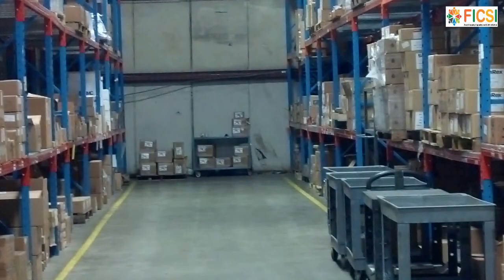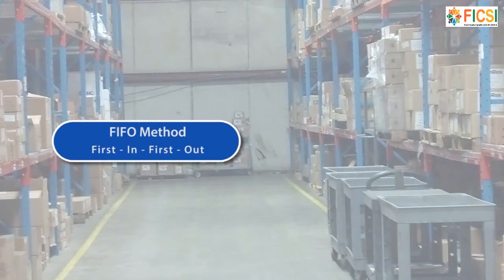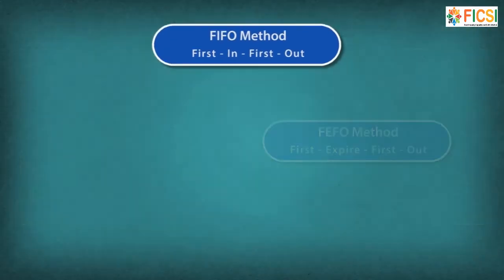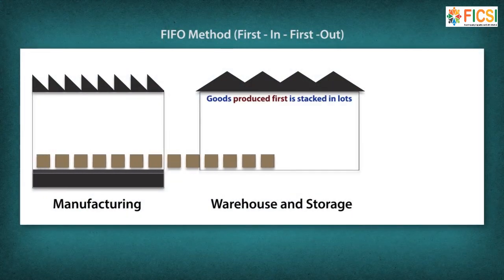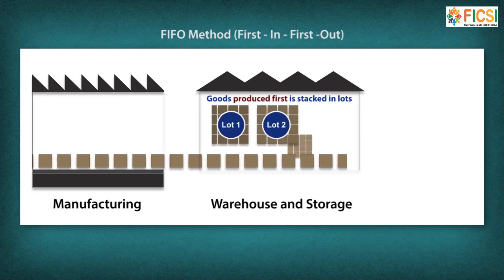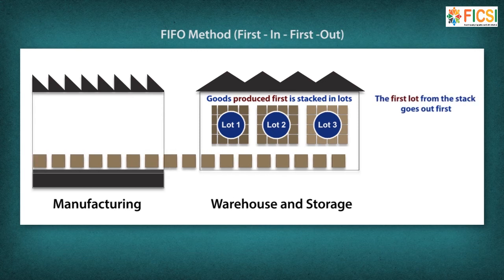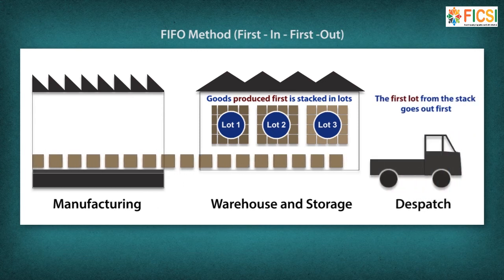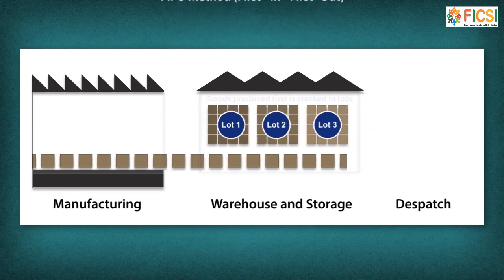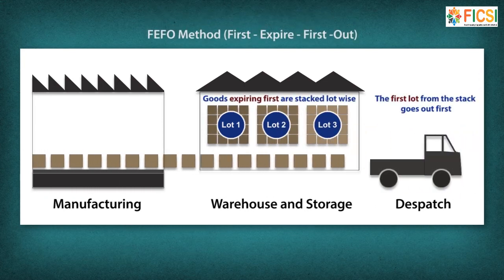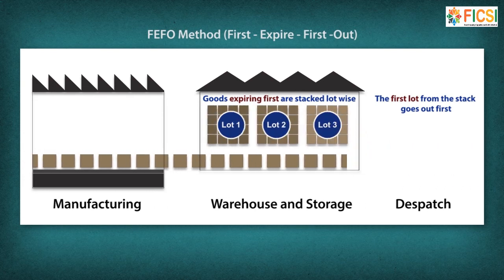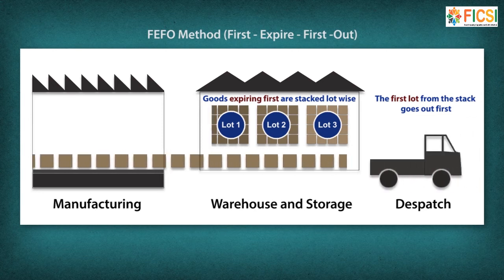Stock rotation systems like FIFO and FEFO are applied. FIFO (First In, First Out) is a stock rotation system that dispatches processed food depending on the order in which it is produced. FEFO (First Expired, First Out) is a stock rotation system wherein products that need to be consumed earlier are shipped first.